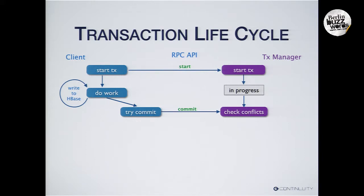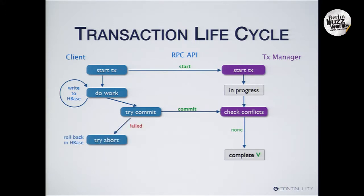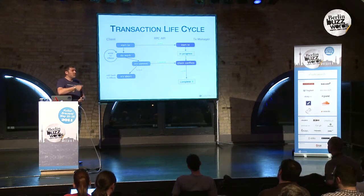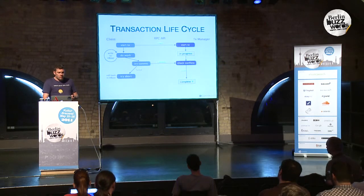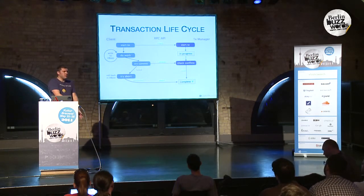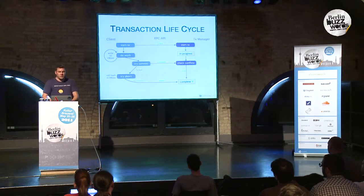The transaction manager, because it knows about all other transactions, can find out whether another transaction has written to the same key. If so, it says: you have a conflict. If not, the transaction is complete — it's now visible in HBase and we can forget about it. But if there's a conflict, the client needs to roll back its changes. HBase allows us to undo a write by issuing a delete for that particular version. If the rollback goes through, everything in this transaction disappears and we can forget about it.